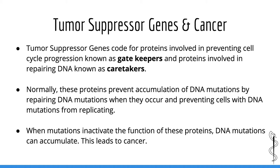These two mechanisms go hand in hand. Normally, cells are not allowed to complete cell division unless their DNA is error-free. The proteins which oversee DNA repair can also influence cell division. The goal of these proteins is to ensure that only cells with error-free DNA are allowed to complete cell division. Failure of tumor suppressor genes leads to cells which replicate despite having DNA errors or mutations, allowing mutations to accumulate and eventually leading to cancer. It is loss of function mutations which promote carcinogenesis.